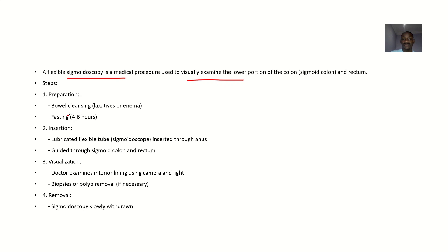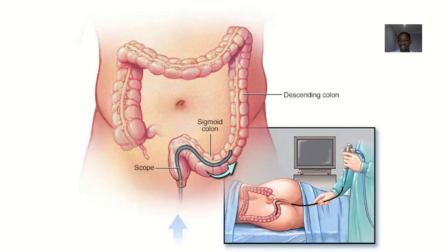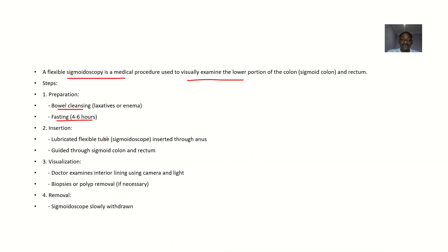Preparation: first, prepare the patient by bowel cleaning and ask the patient to fast for at least four to six hours before starting any process using the sigmoidoscopy. Then, with the patient lying down on the lateral side, lubricate the tube. Then insert the lubricated flexible tube inside the anus and guide it through the sigmoid colon and the rectum.